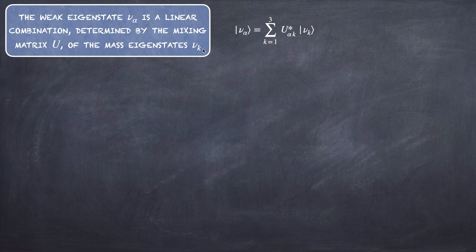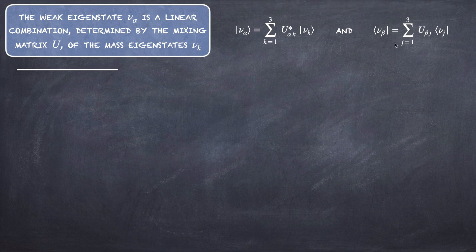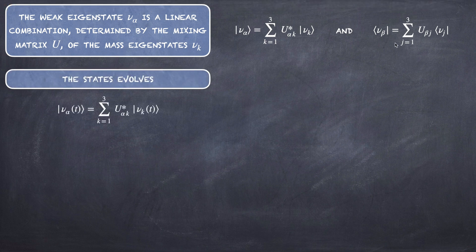The weak eigenstate ν_α is a linear combination of the mass eigenstates — for instance ν_K. We consider the summation over K with matrix elements U*_αK. This is written in ket space, while the conjugate is in bra space.